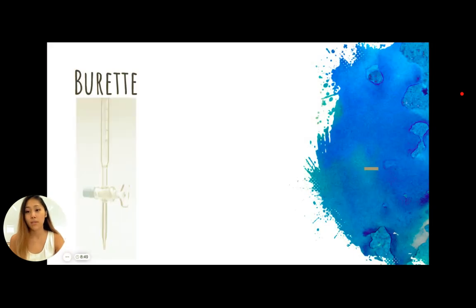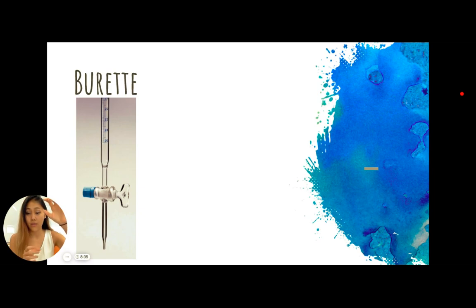So a burette looks like this. This is an apparatus that is very accurate, one of the most accurate apparatus in a lab that we could have. You essentially have your liquid that you pour in from up top and the liquid would get dripped down this way where you will turn this knob and as you turn this knob the liquid would start coming down.